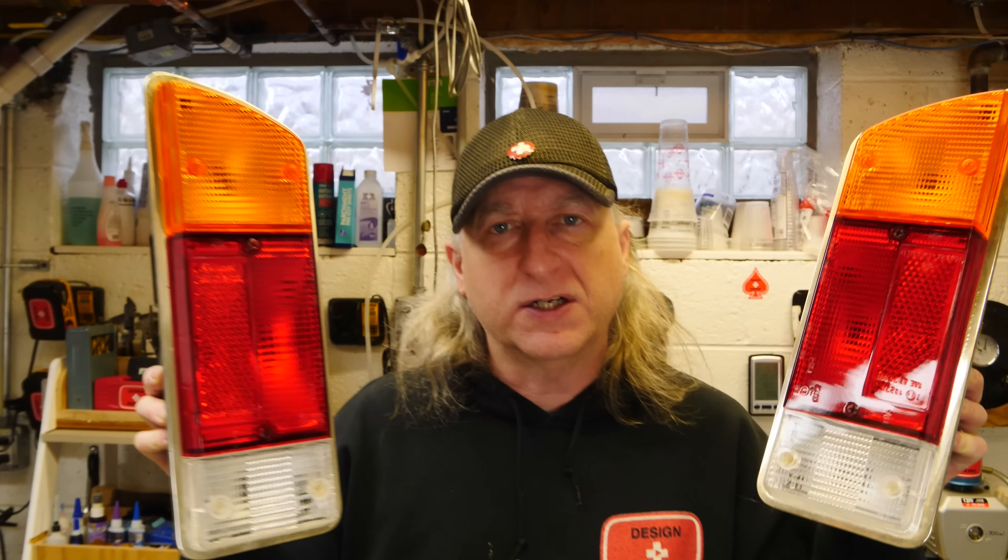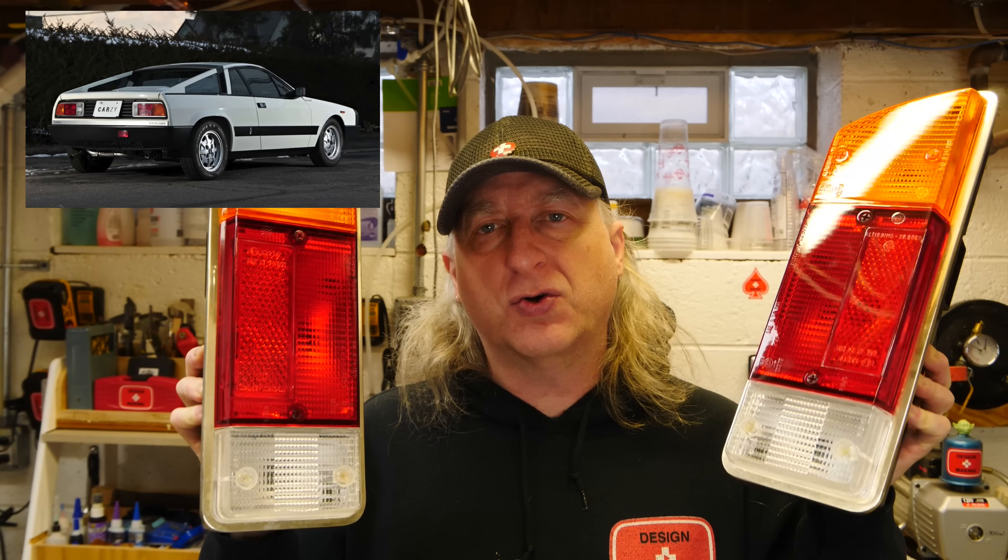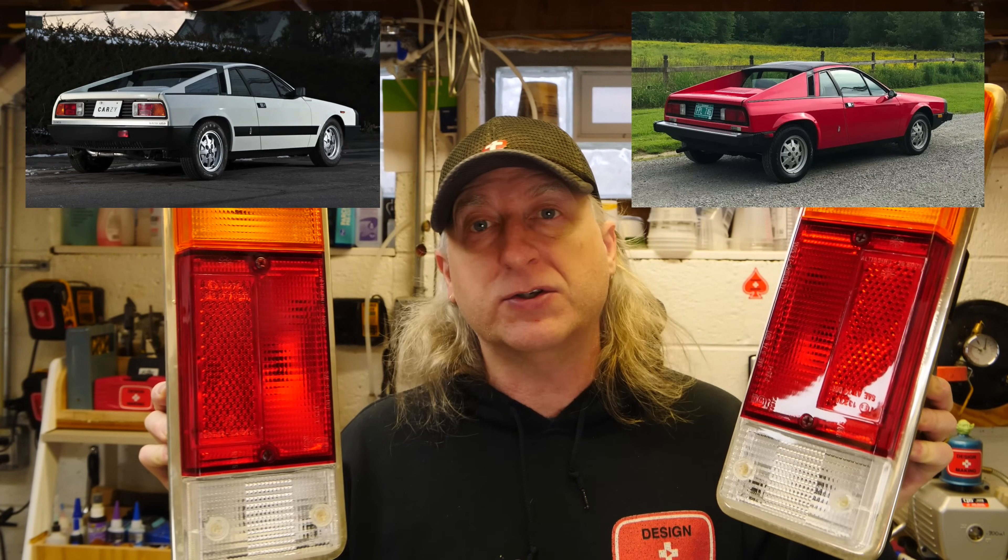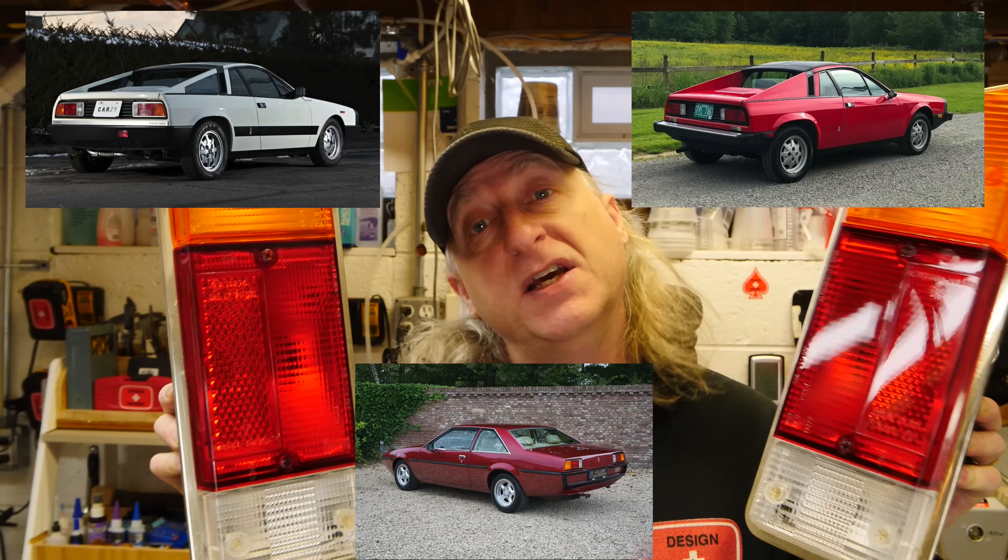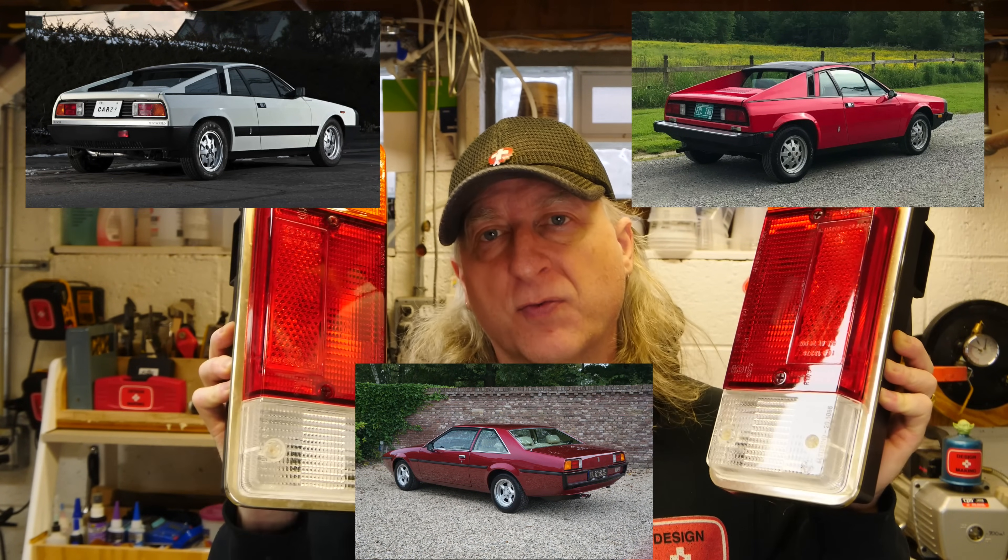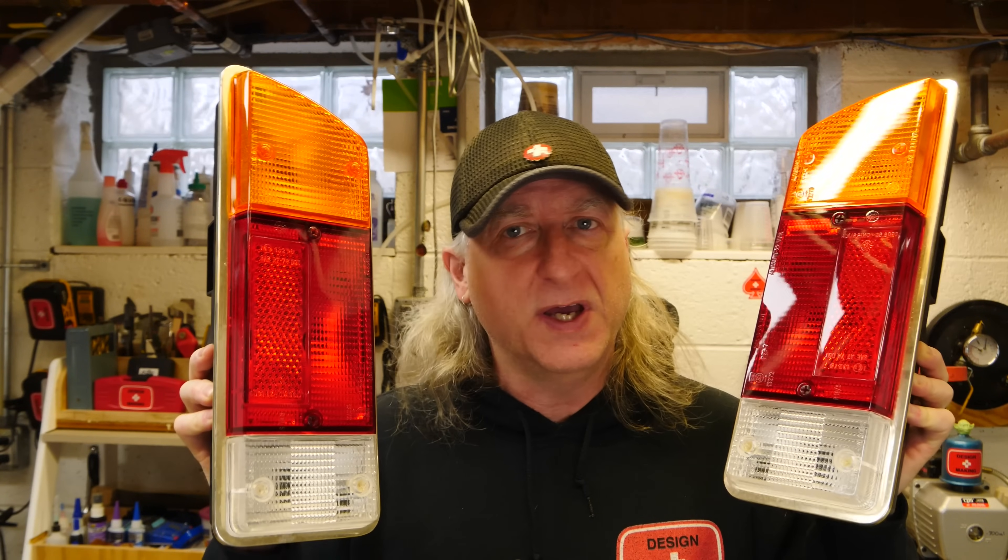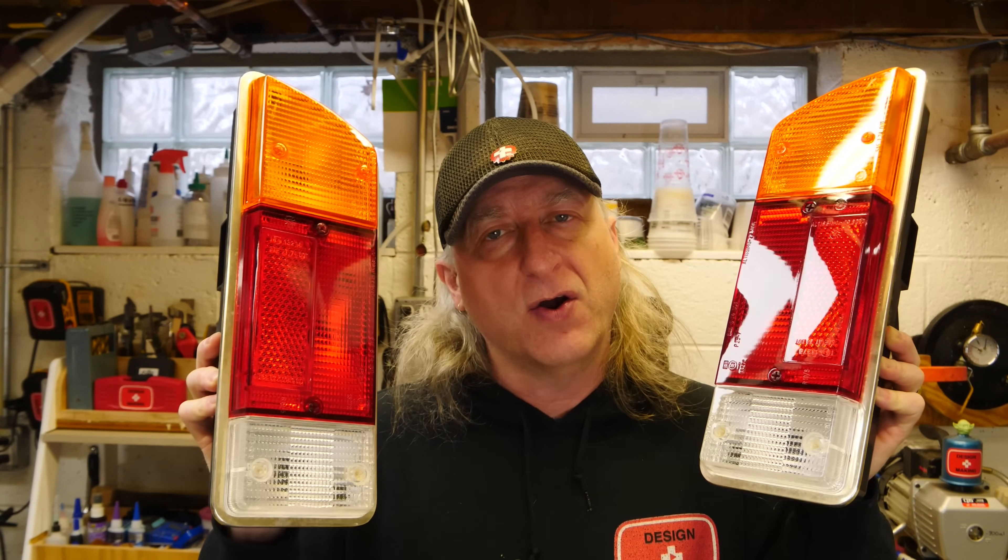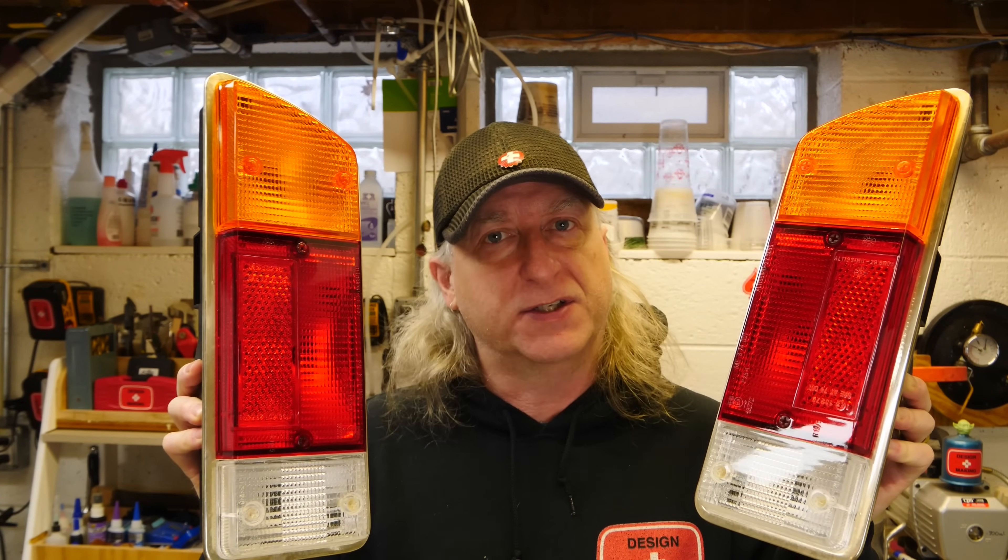These are Lancia Monte Carlo and Scorpion taillights. They were also used by the Bitter SC in the 80s, and I'm going to reproduce all six of them in clear red and orange for Bitterparts.com.